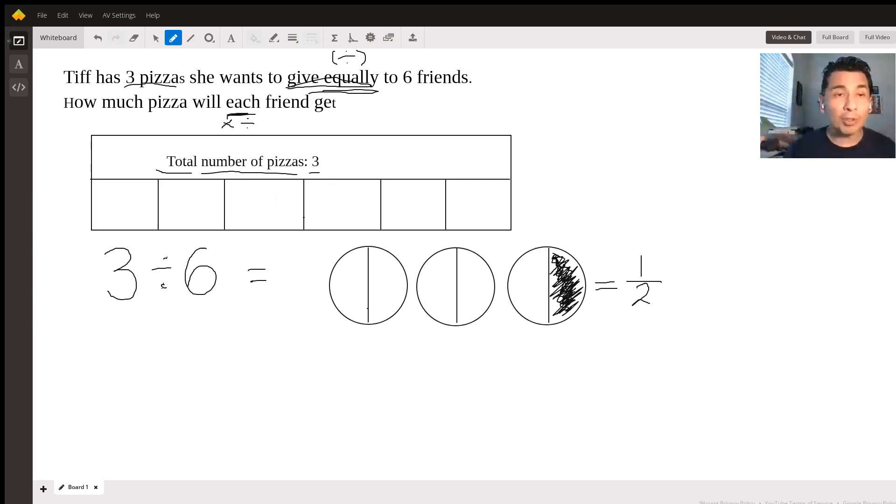How many pizzas do we have? We have 3 pizzas that we want to share equally between 6 friends. This is just a model. In here I put 1, 2, 3, 4, 5, 6 pieces. The 3 pizzas are going to be divided, shared equally, between 6 friends. We have the division problem here: 3 divided by 6.